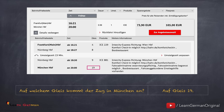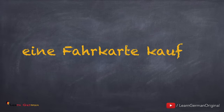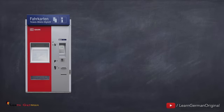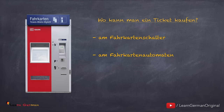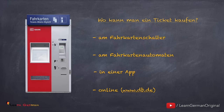So mostly you can choose the connection that suits you and buy the ticket online, but there are other ways to buy the ticket. Wo kann man ein Ticket oder eine Fahrkarte kaufen? Man kann am Fahrkartenschalter kaufen, oder am Fahrkartenautomaten. Heutzutage kann man auch in einer App oder online die Fahrkarten kaufen.